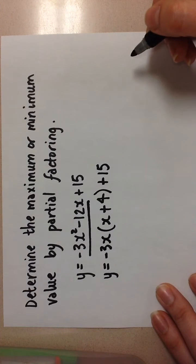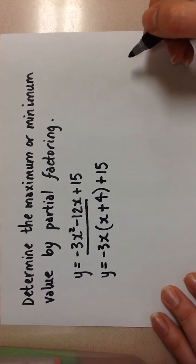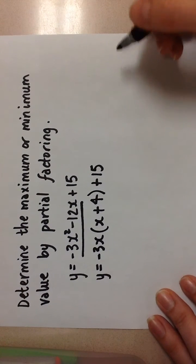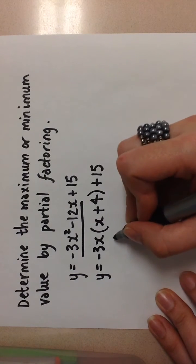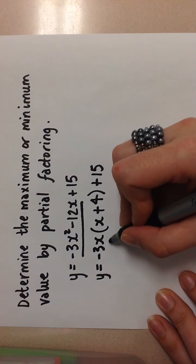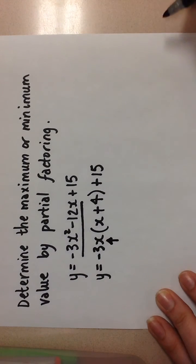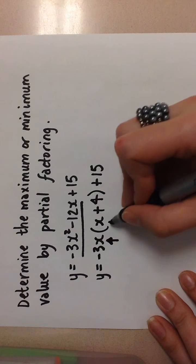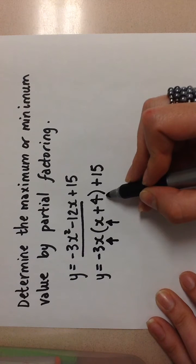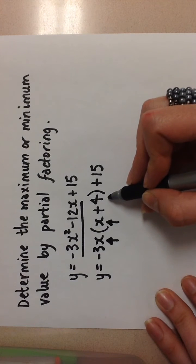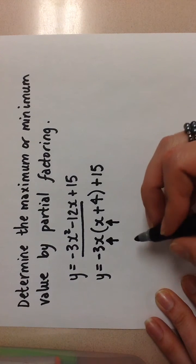Now this is going to allow us to choose two points that are symmetrical on this parabola. The two points I'm going to choose are an x value of 0, because that will make this portion equal to 0, and an x value of -4, because it will make this factor equal to 0. This will be the easiest way to find two symmetrical points.